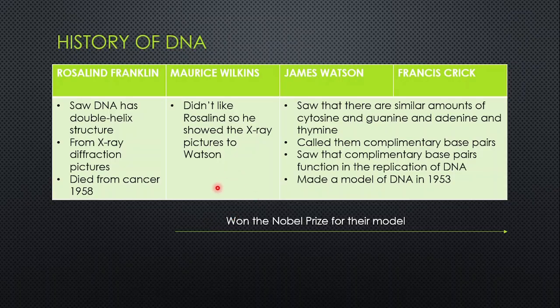James Watson and Francis Crick were also doing studies on DNA. They observed similar amounts of cytosine and guanine, and adenine and thymine, so they called them complementary base pairs, reasoning that these pairs must join together. They determined that complementary base pairs function in the replication of DNA. Using the pictures obtained from Maurice Wilkins, they made a model of DNA in 1953 showing a double helix structure. The three of them won the Nobel Prize for their model, since Rosalind Franklin had already died — essentially, her work was used without credit.